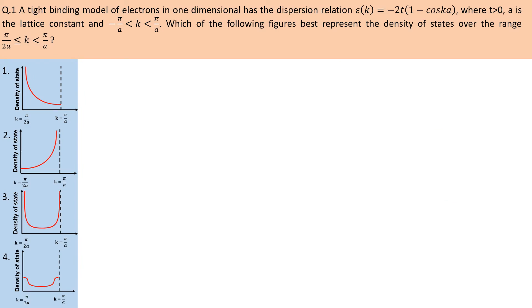A tight binding model of electrons in one dimension has the dispersion relation given. Which of the following figures best represents the density of states over the given range? This question is based on the tight binding approximation for a 1D electron system with a dispersion relation, and we need to identify the best graph for density of states.